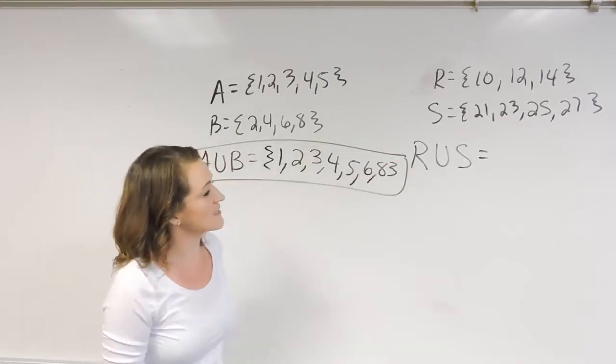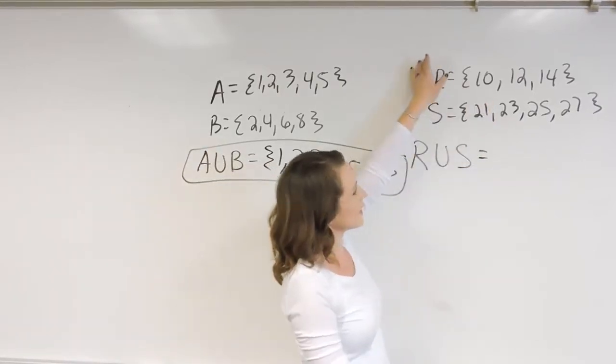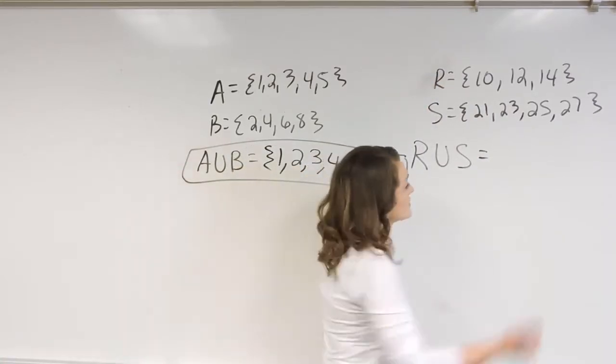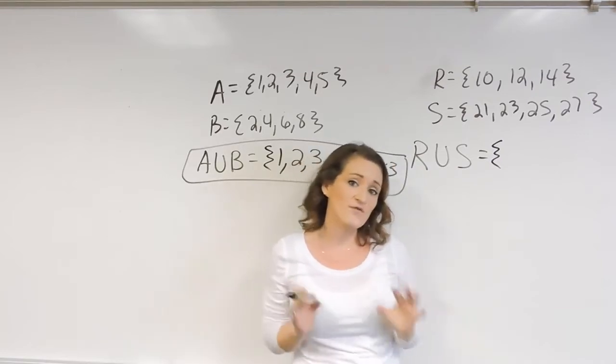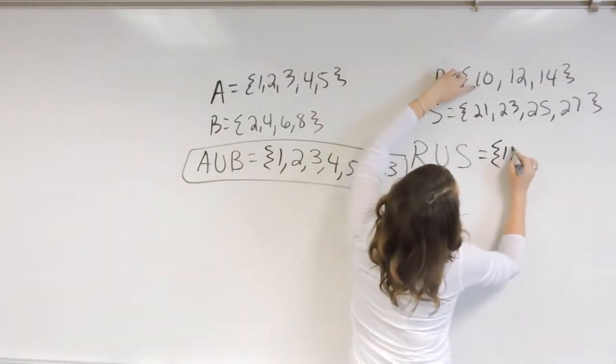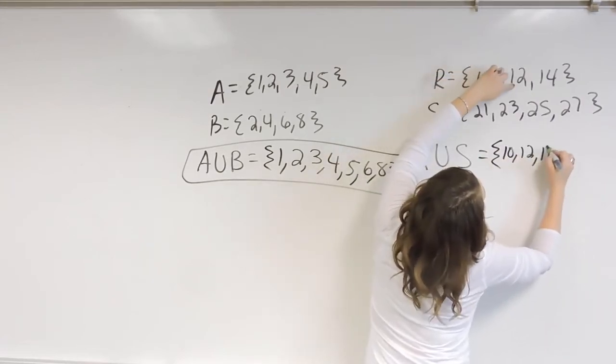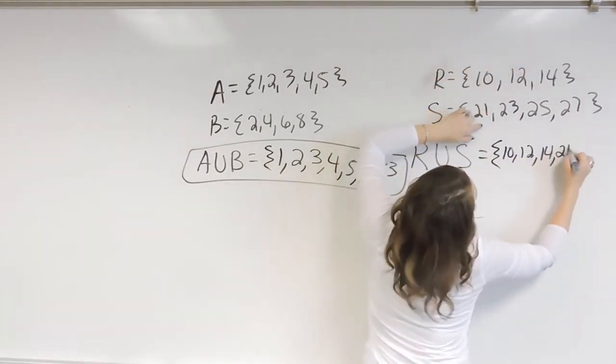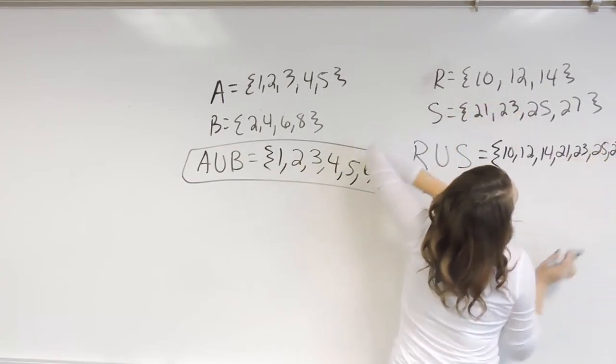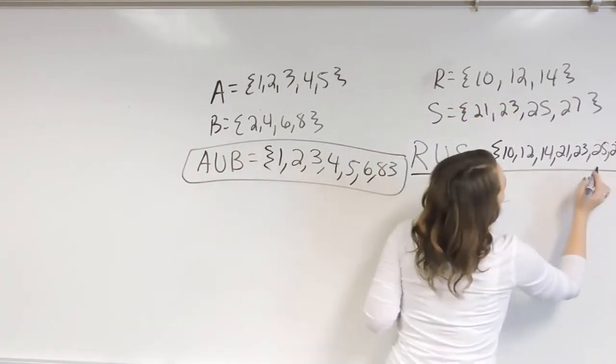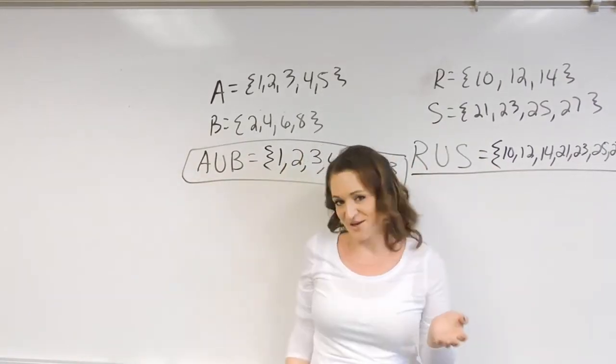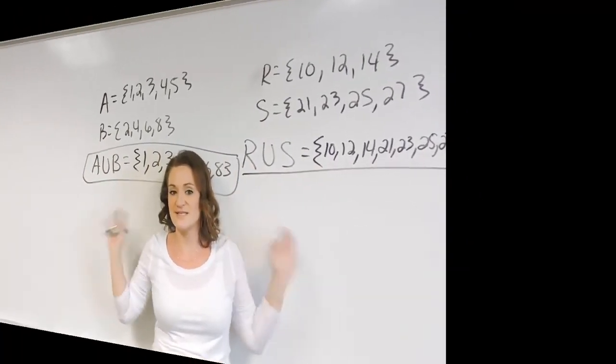So let's take a look at this one over here. We have the set R and the set S, and we're going to find the union of the two sets. So again, it's just a matter of listing everything in both sets. We have a 10, a 12, a 14, a 21, 23, 25, and 27. So that is everything in both sets put together there. That's how you find the union when you're given sets.